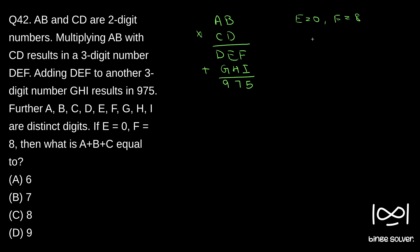From this, we can see F plus I is equal to 5. We already know F is equal to 8. So, 8 plus I equals 5. For this to give a units digit of 5, this has to be 15, since even if I is 9, it will be less than 17 — 9 plus 8 is 17. So it will not be 25; it will be 15. So 8 plus I is 15, which gives I equal to 7.